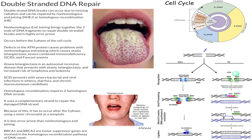Now let's do a quick summary. When you have double-stranded DNA breaks, which can occur due to ionizing radiation, you can either repair it by non-homologous end-joining or homologous recombination. Non-homologous end-joining essentially just sticks the two ends of the DNA fragments together, is highly error prone, and occurs before the S phase of the cell cycle.